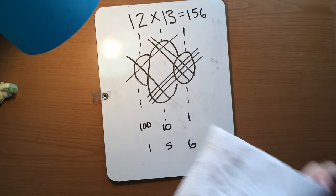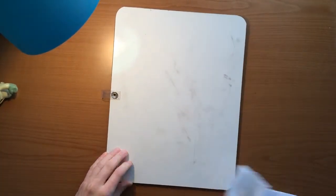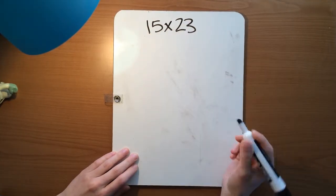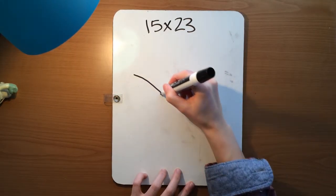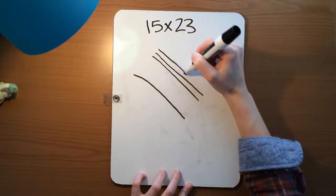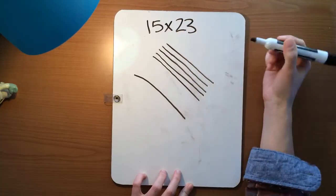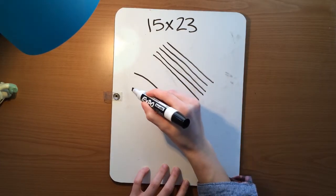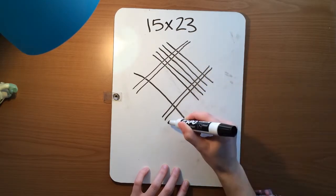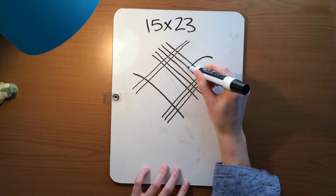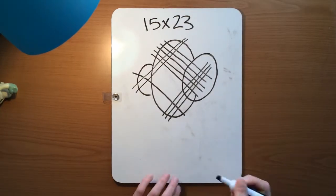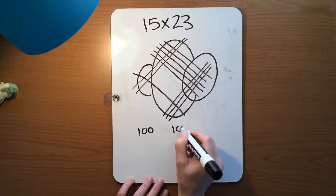Let's go ahead and do another problem. We'll do 15 times 23. So we'll go ahead and start by making our diagonal lines. We'll make 1 here for the 1 in the tens place, and then 5 above it for the 5 in the ones place. 1, 2, 3, 4, 5. Now we'll come across diagonally, make 2 lines together for the 2 in the tens place, and come down here and make 3 for the ones place. So we'll go ahead and circle these together, circle the ones in the middle, and circle these two on the outside. This is our hundreds place, tens place, and ones place.